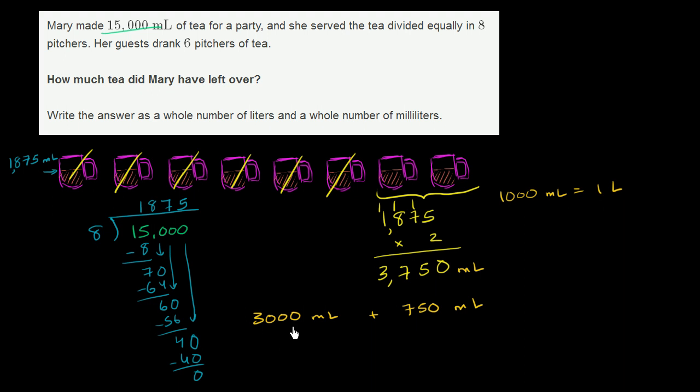Now, the reason I wrote it this way is because 3,000 milliliters, this is literally three thousand thousandths of a liter. We already saw that 1,000 milliliters equal one liter. So this piece right over here, this is equal to 3 liters.